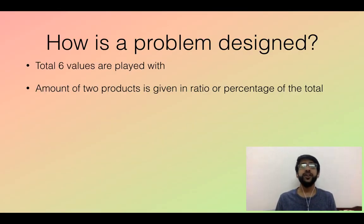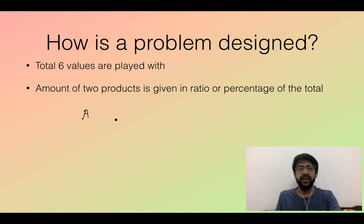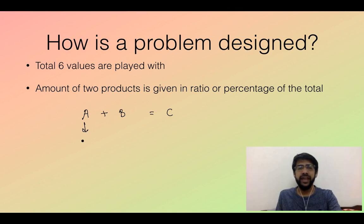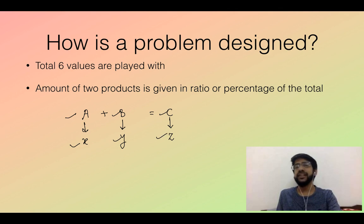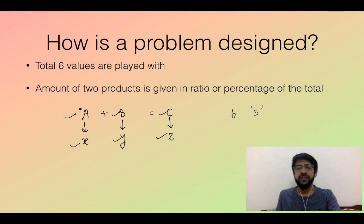Quantity is nothing but the amount of the substance we are going to mix. So how is a problem designed in this section? There are a total of six values a question can ask about. We have substance A and substance B, and when we add these two amounts we get the amount of substance C. The quality of A is represented by x, the quality of B by y, and after mixing we get the quality of the mixture represented by z.